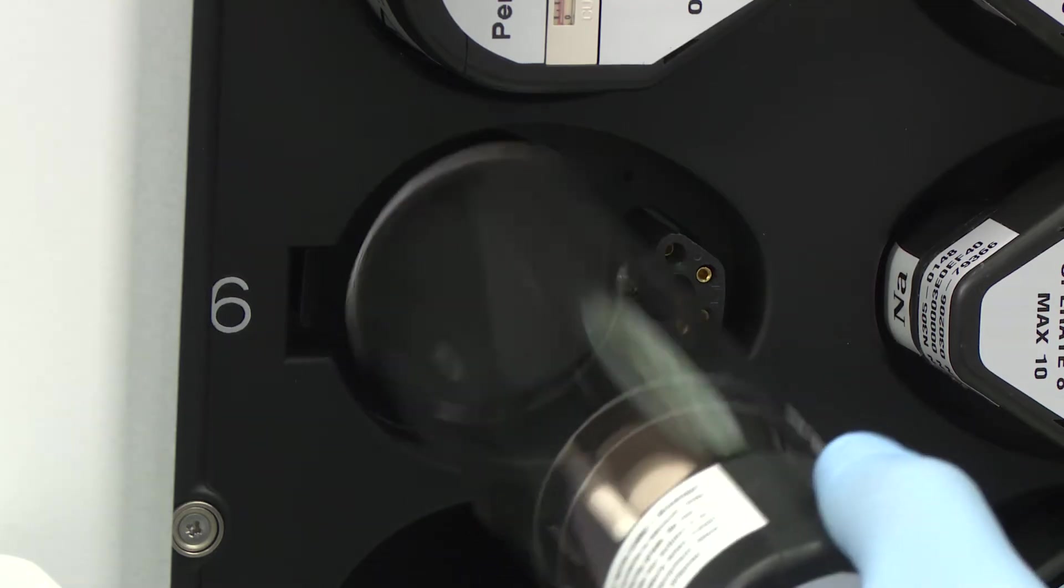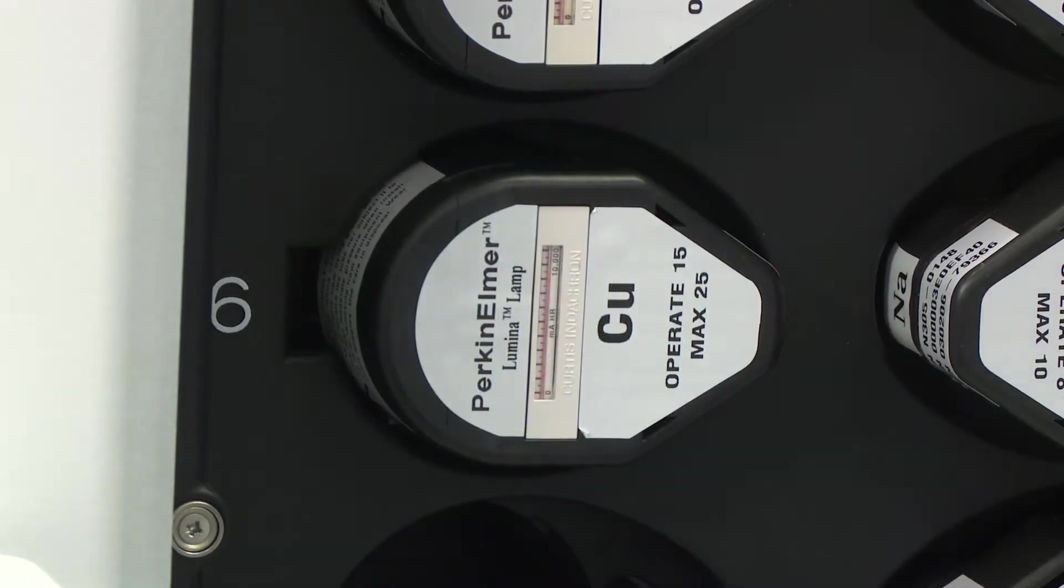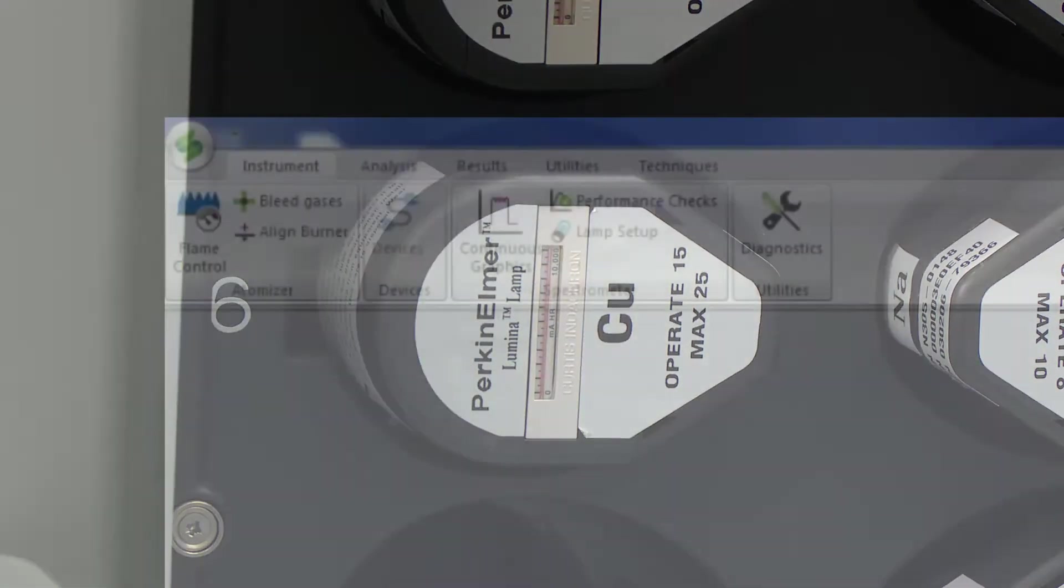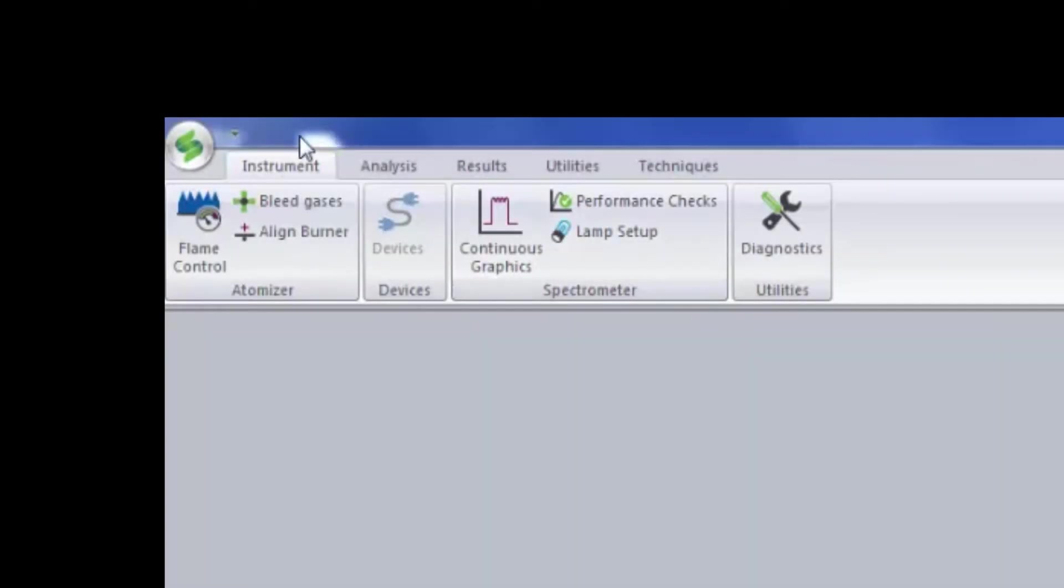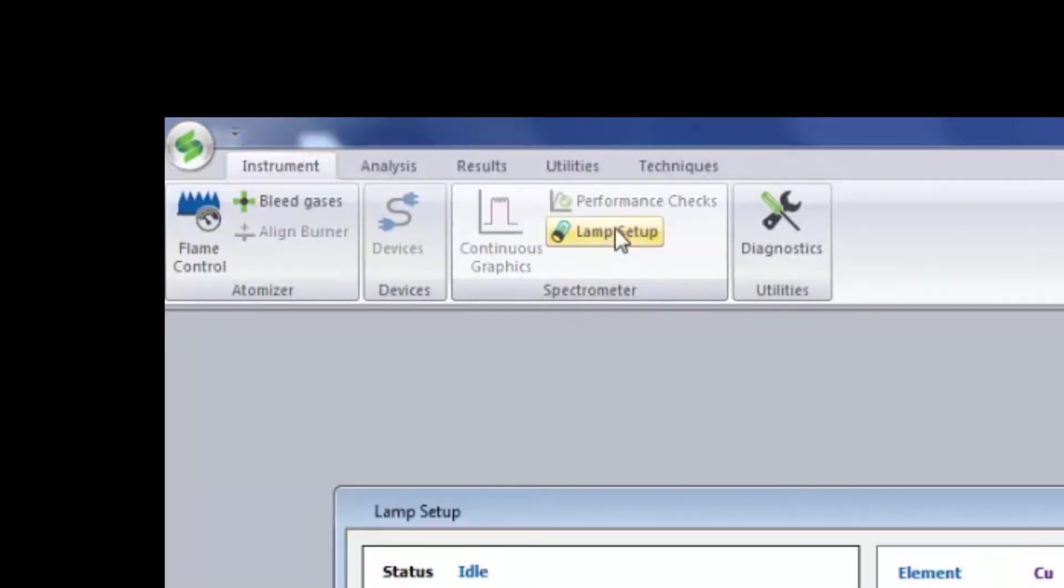Carefully and without force guide the lamp into one of the lamp compartments. Once your lamp is installed in the lamp compartment, close the door and go to the instrument tab in the software located in the spectrometer group. Click on lamp setup.